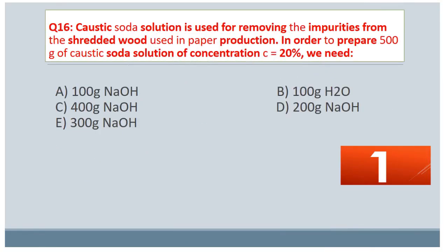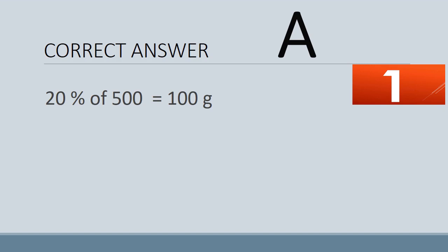Question No. 16. Caustic soda solution is used for removing impurities from shredded wood used in paper production. In order to prepare 500 g of caustic soda solution of concentration C = 20%, we need: A. 100 g NaOH. B. 100 g H₂O. C. 400 g NaOH. D. 200 g NaOH. E. 300 g NaOH. The correct answer is A. We need 100 g NaOH.